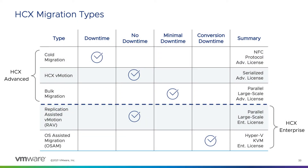Here we have a breakdown of the migration types available with each HCX license. With HCX Advanced, you can take advantage of cold migration, which requires downtime, and HCX vMotion, which does not require downtime. However, both of these methods only allow you to migrate VMs one at a time. Bulk migration allows you to migrate more than one VM at a time and takes advantage of vSphere replication to replicate the VMs ahead of time, so once replicated, minimal downtime is required to power down the VM and power it up at the destination.